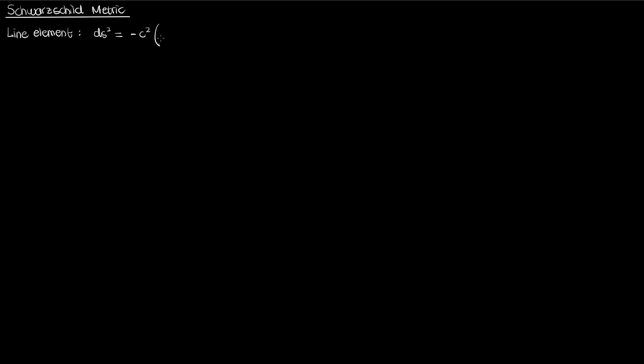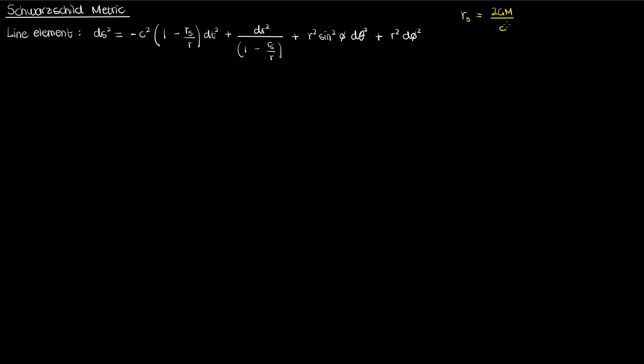The line element corresponding to this metric tensor solution is given by the equation for ds squared. R_s, by the way, is the Schwarzschild radius given by the following expression. The R, theta, and phi represent the spherical Schwarzschild coordinates.